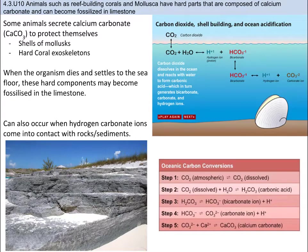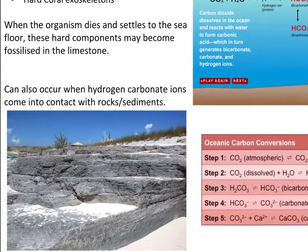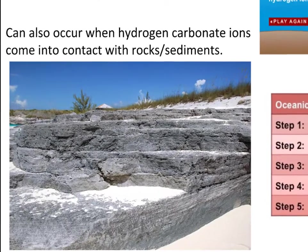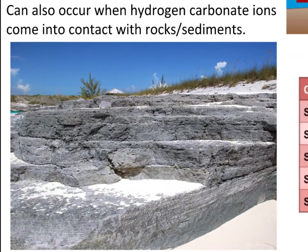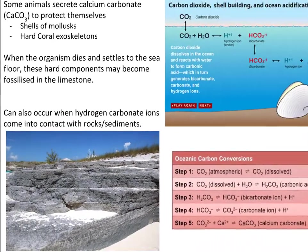One of the fluxes of carbon is the transfer in the hydrosphere from organisms and water into the sediment through sedimentation. Hard-shelled organisms like mollusks and corals use carbon dioxide in water to ultimately make calcium carbonate, which is what their hard shells are made of. When the organism dies and settles to the seafloor, these hard components may become compacted and fossilized into limestone. Additionally, when hydrogen carbonate ions contact rocks and sediments on the ocean floor, they can acquire metal ions and form limestone as a precipitate, though this is less common than the biological method.